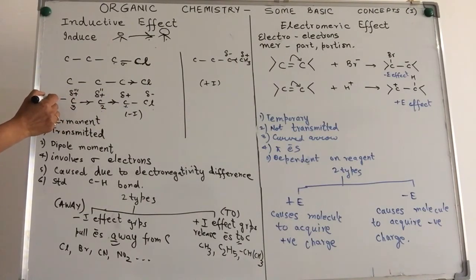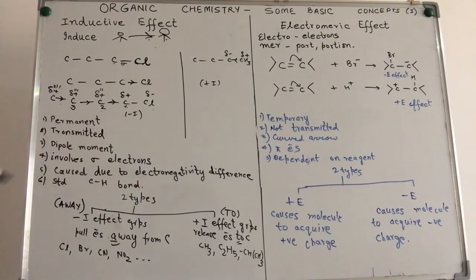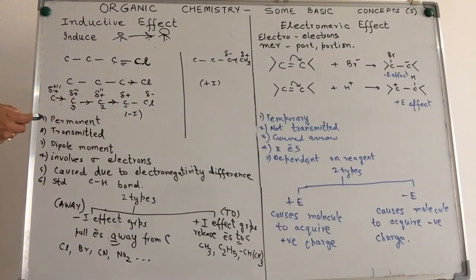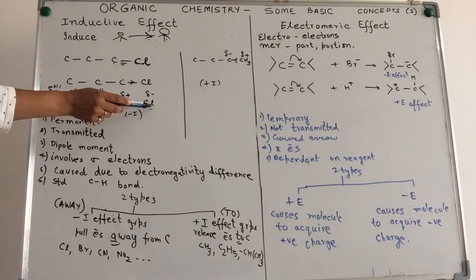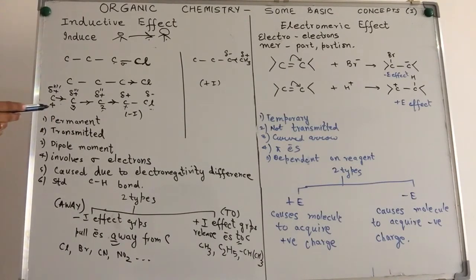By the time we reach the fourth carbon atom, this effect has subsided and become almost negligible. So beyond the fourth carbon atom, this tendency to pull electrons becomes almost zero. We have a case of chain behavior where chlorine bullies the first carbon, which bullies the next, and so on. But by the time it reaches the fourth carbon atom, the effect has become quite subdued.